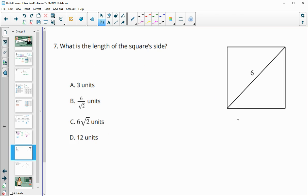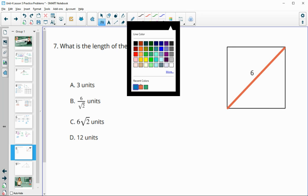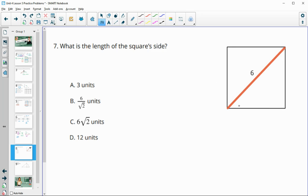Number 7, what is the length of the square's side? Remember, a square takes and splits these 90-degree angles into two equal angles.